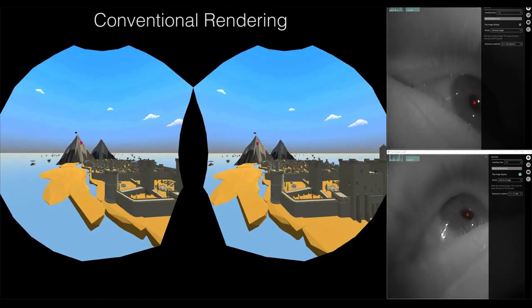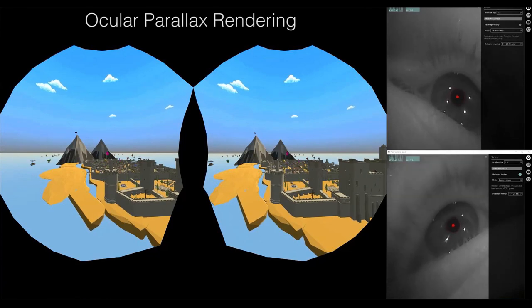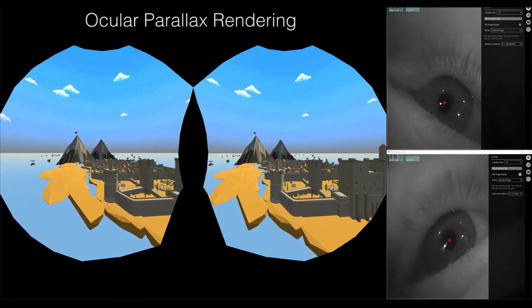In conventional VR rendering, the virtual scene incorrectly remains static as the user gazes around. With ocular parallax rendering enabled, objects at different depths shift depending on the user's gaze as they do in a real environment.